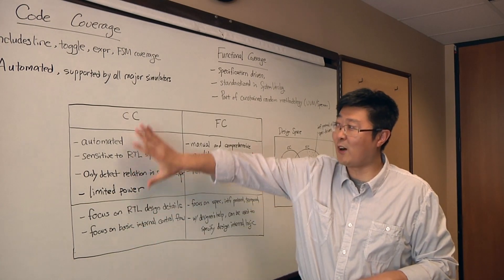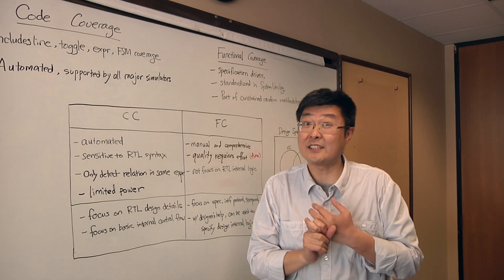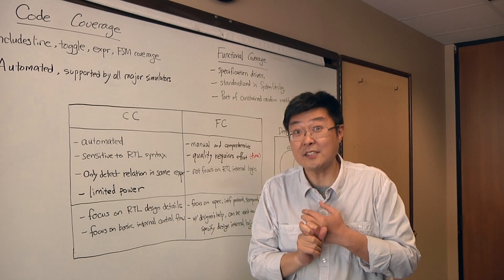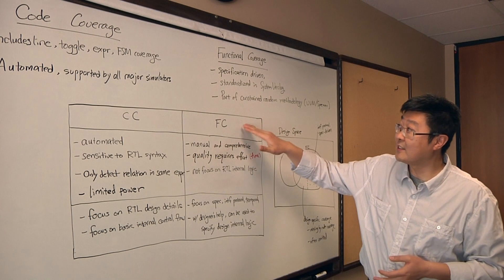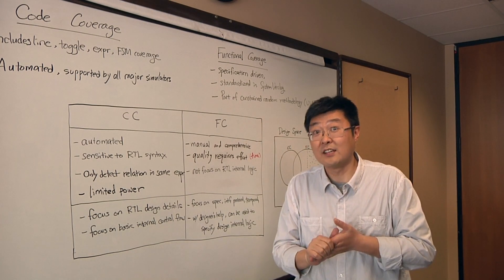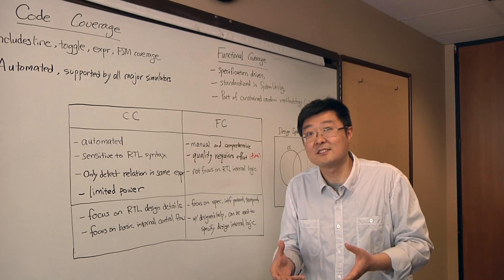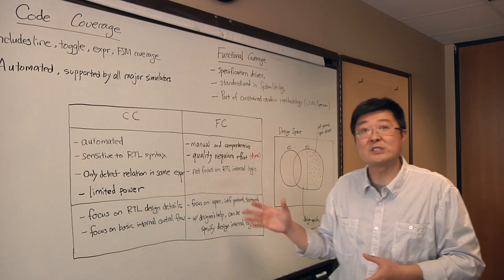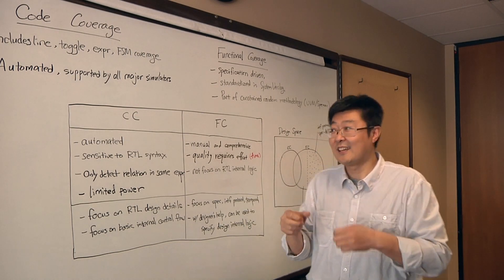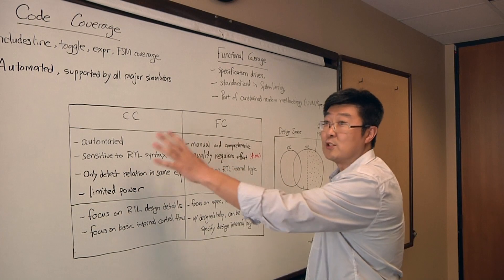As I said before, code coverage is automated but has limited power. Some of the functionality is not described automatically in code coverage. While functional coverage is high effort with high return. If you don't put enough effort, the return is not high. Therefore, both approaches have limitations. That's why today, when people really do verification sign-off, they use both of them.